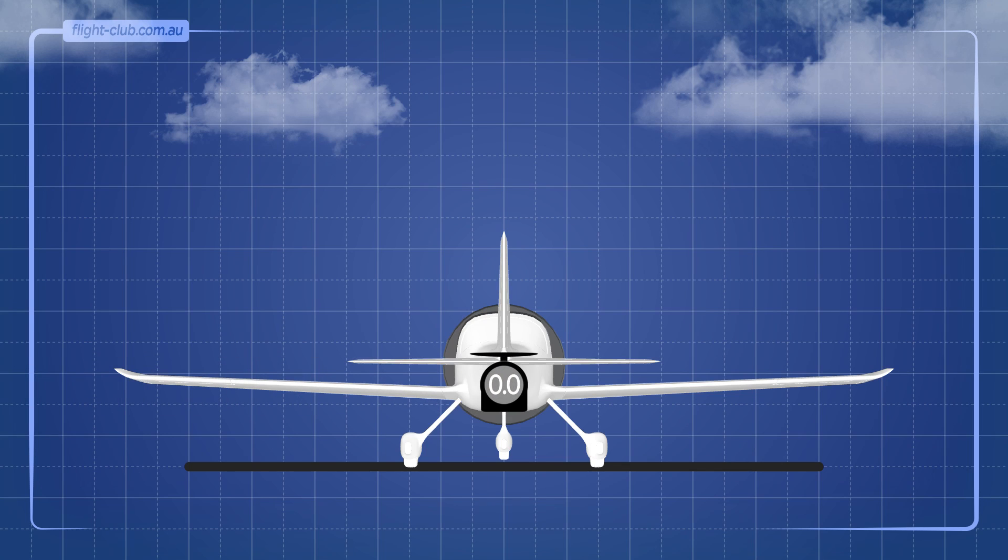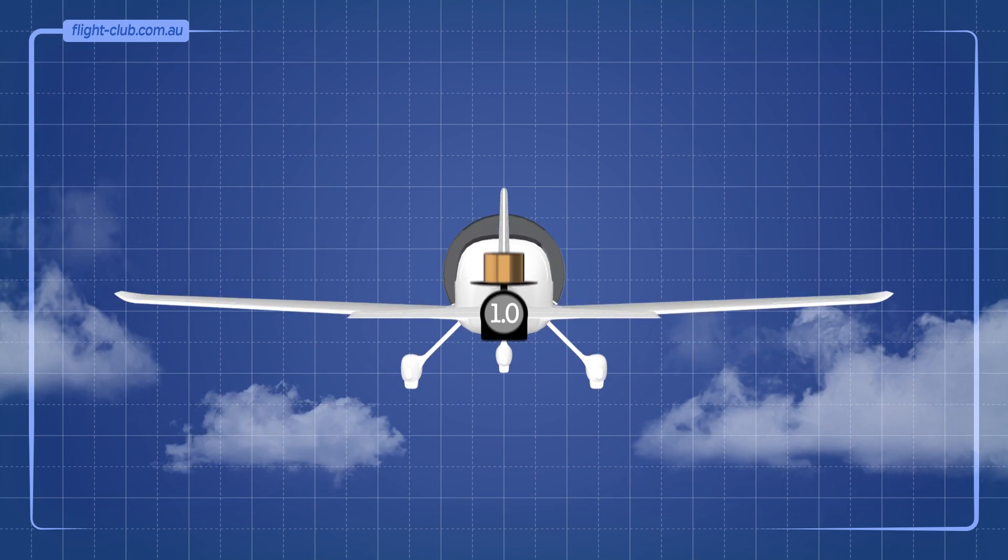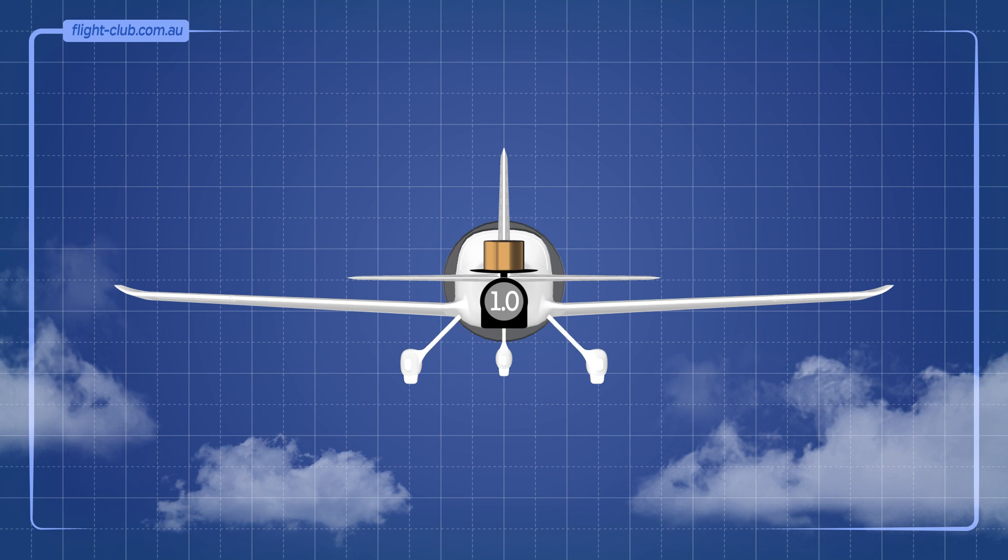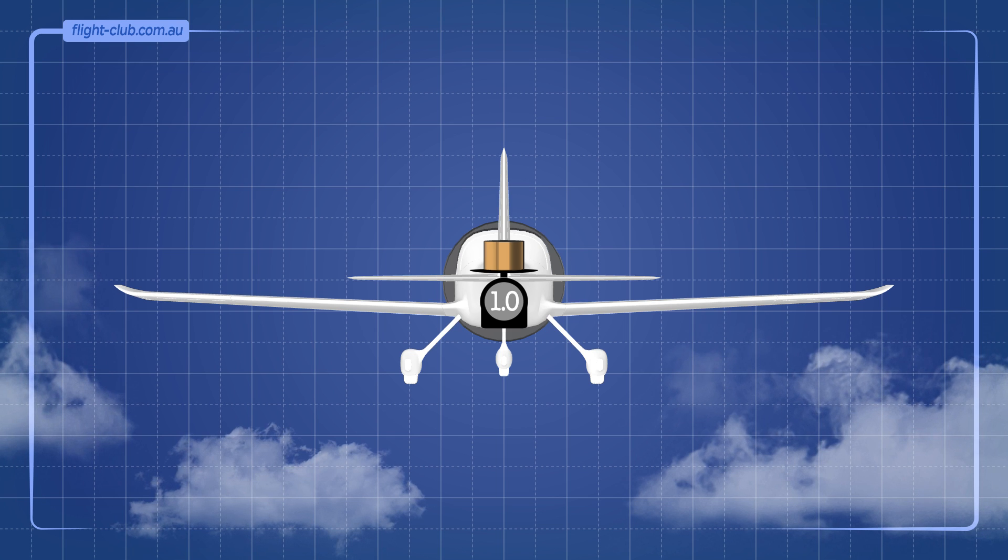If you place a scale inside a stationary aeroplane and put a 1 kilogram lump of metal on it, the scale shows 1 kilogram of weight. Flying straight and level, high up in the sky, the scale also shows 1 kilogram of weight.